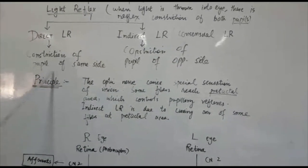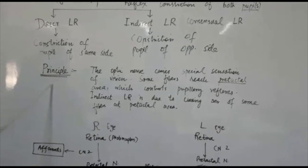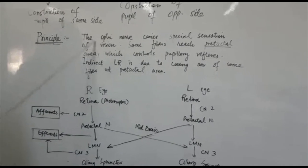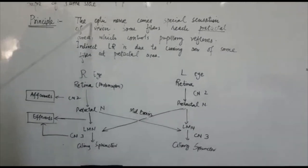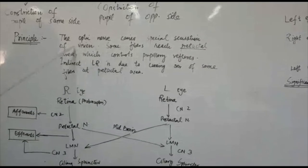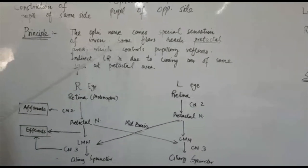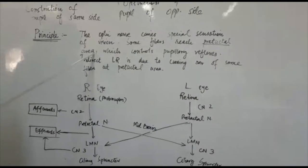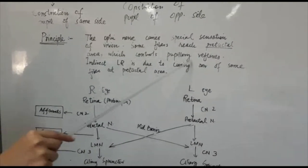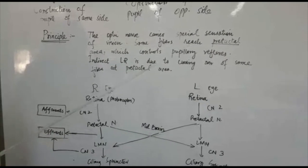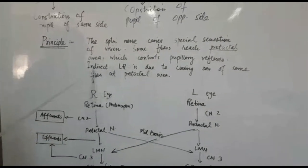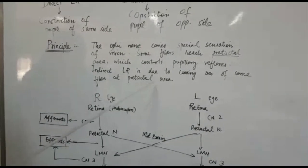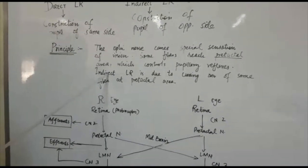Now after explaining, let us proceed to what is the principle behind this reflex. Basically the optic nerve, which is the second cranial nerve, carries special sensation of vision. Some fibers reach the pretectal area which is present in the midbrain and controls the pupillary reflexes. Some of the fibers cross, and due to this crossing over at the pretectal area, indirect light reflex occurs.